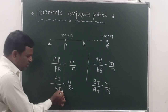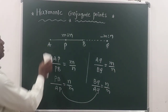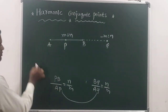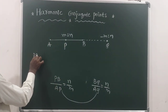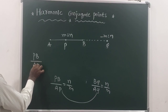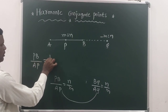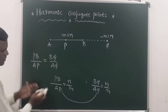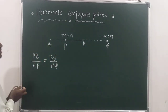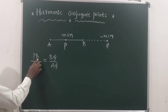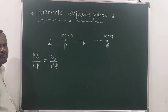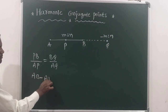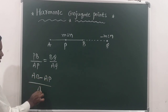I want to equate these two. On equating both of them, we get PB by AP which is equal to BQ by AQ. In the next step, in place of PB, you can write AB minus AP, whole divided by AP.